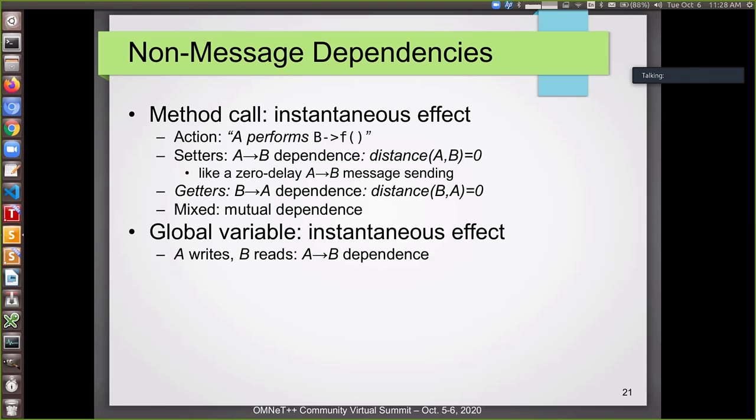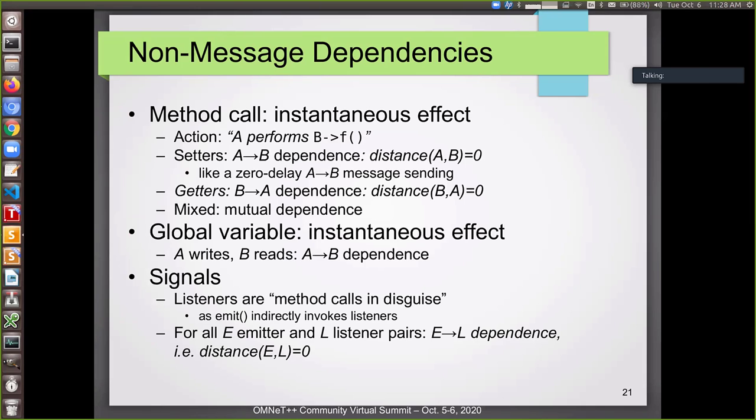And if the module B is sending the information back to A, it's a dependence in the other direction. So distance BA equals zero. And if the function does both kind of thing, that means mutual dependence. Of course, there's global variables. They have instantaneous effect as well. So if there's a global variable which is written by module A and read by module B, then it's an A to B dependence. It's like a setter function. And there is also signals, simulation signals. Simulation signals, actually, they are method calls in disguise because if you emit a signal, it propagates to other parts of the network and it invokes the listener functions indirectly. So the emit call indirectly invokes the listeners. So it also means that there is a dependency from all modules which contain the emit call to the modules which contain the listeners. So this is also like zero dependencies. So all these dependencies have to be discovered and they have to be entered into that matrix which produces the distance function.